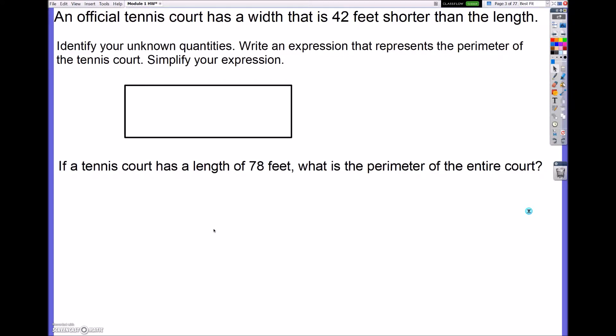So it says the official tennis court has a width that is 42 feet shorter than the length. It says identify the unknown quantities and write an expression that represents the perimeter of the tennis court, so we're going to simplify that as well. So remember, the first thing we want to know is what is the perimeter. The perimeter is the distance on the outside. And what we currently do not know is the length and the width. But it does give us some information, so I'm going to say the unknown variable is the length.